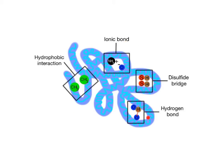Because tertiary proteins are very large molecules, they need additional chemical bonds to hold them together and maintain their specific shapes. Disulfide bridges are very strong covalent bonds between two sulfhydryl groups, located on the amino acid cysteine. Weaker bonds, such as hydrogen bonds, ionic bonds, and hydrophobic interactions, also help maintain the protein's tertiary structure.